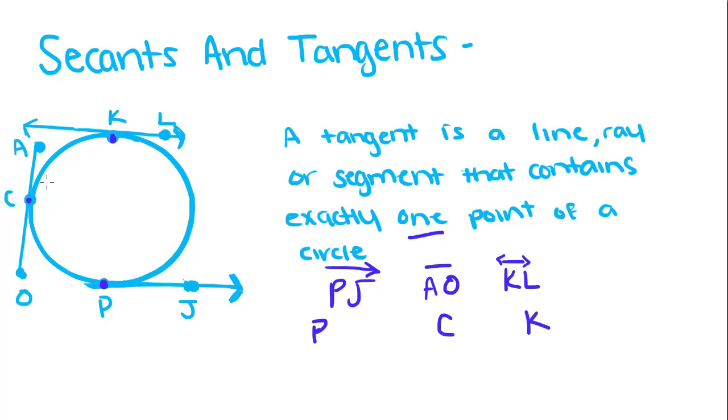So as long as there's only one point that this line, ray, or segment intercepts this circle at, it's a tangent of the circle.